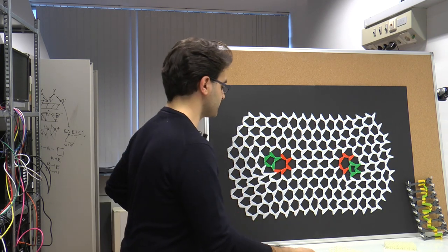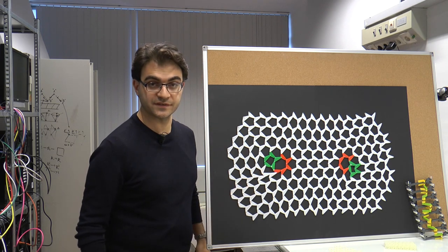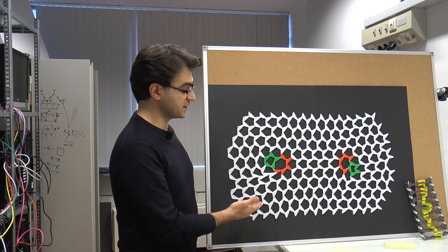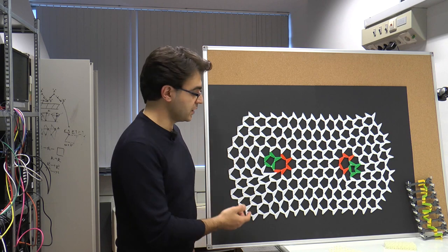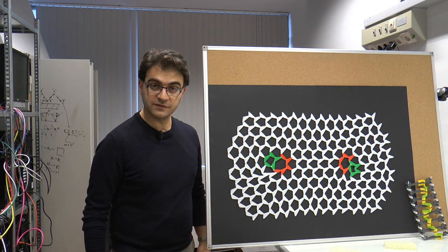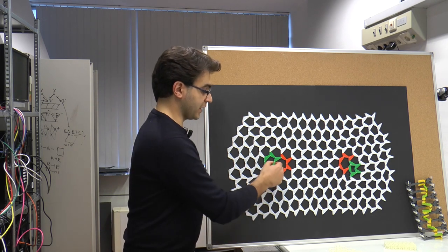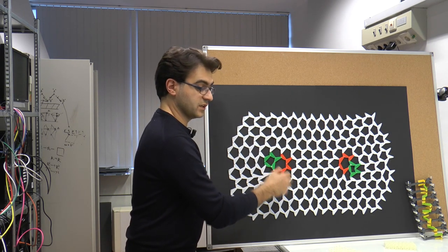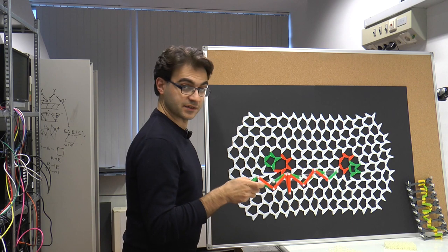Similar behavior can be observed also in two-dimensional examples. For example, we looked at this twisted Kagome lattice, which has dislocations, which are topological defects capable of harboring soft modes, very much like the kinks here.